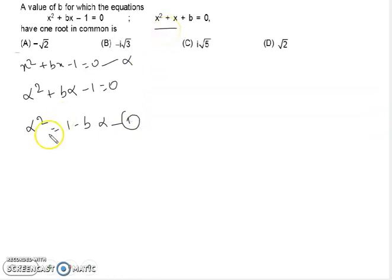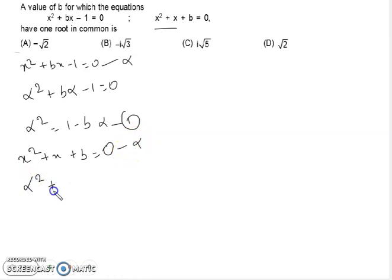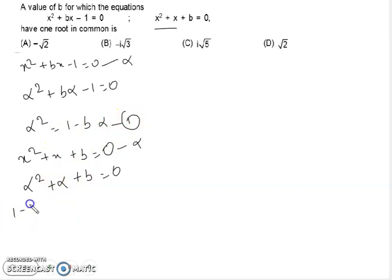Now taking the second equation: x² + x + b = 0. This equation also has the common root alpha, so alpha satisfies it too: α² + α + b = 0. We substitute α² = 1 - bα from the first equation, giving us 1 - bα + α + b = 0.